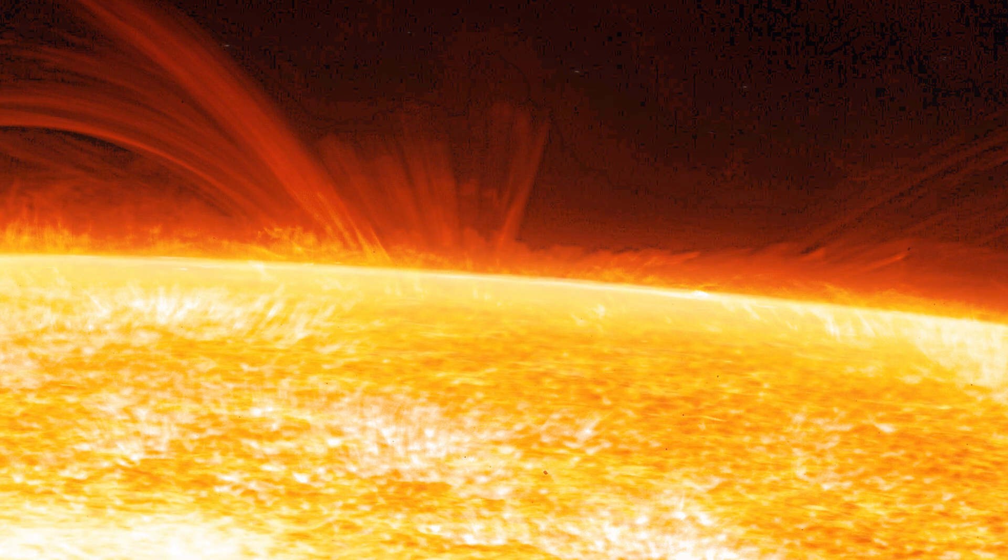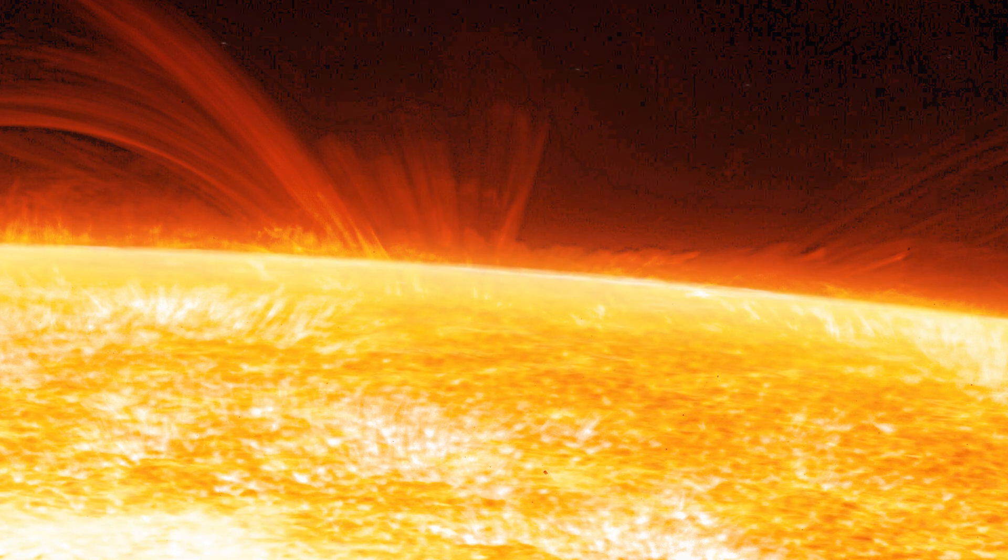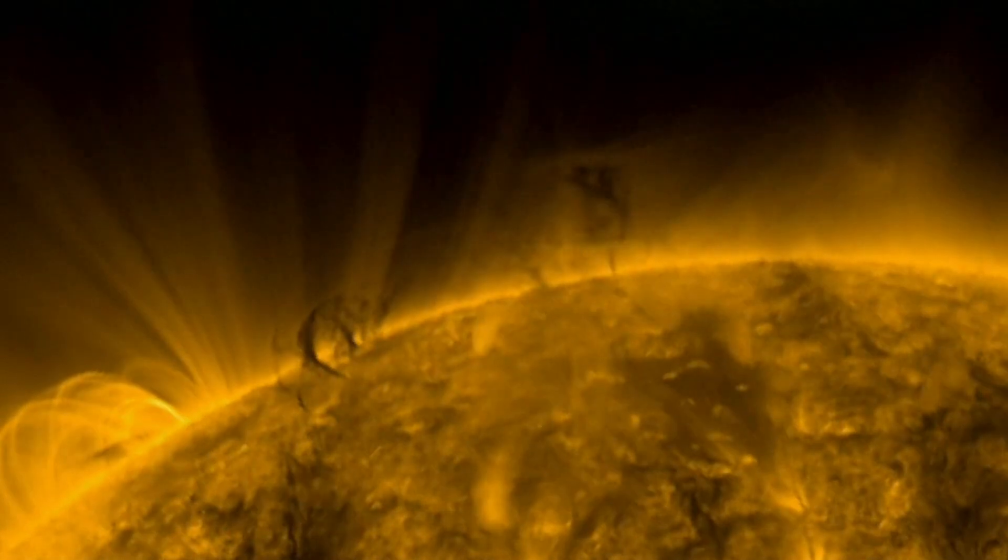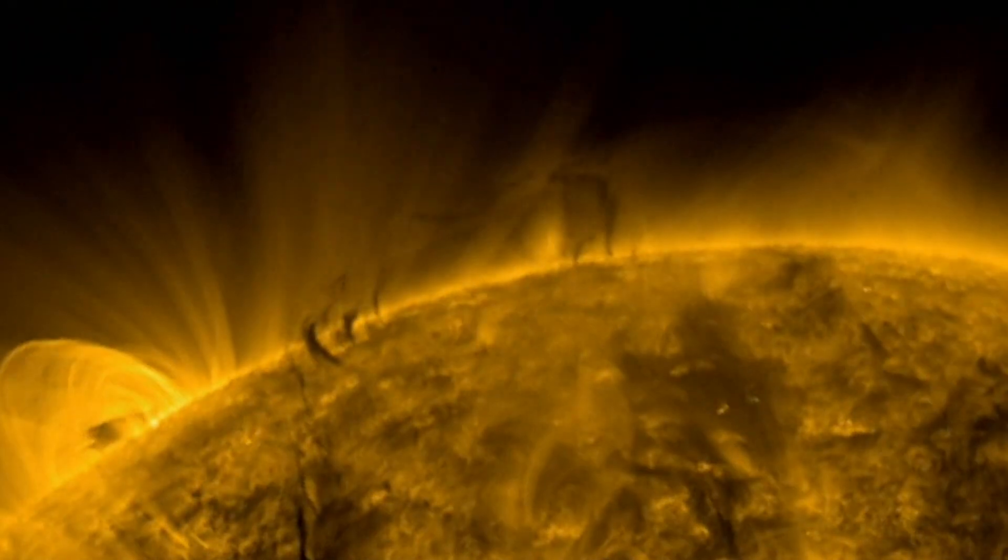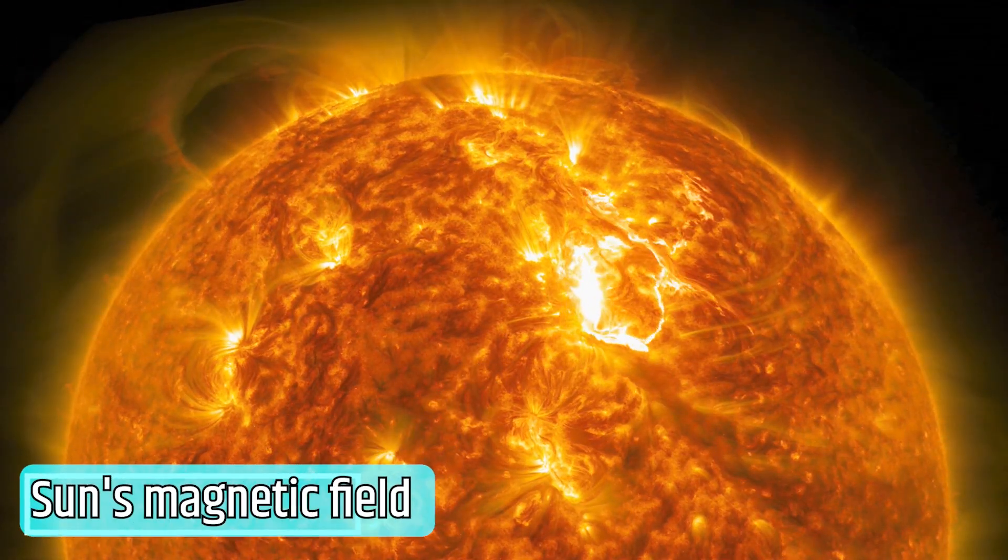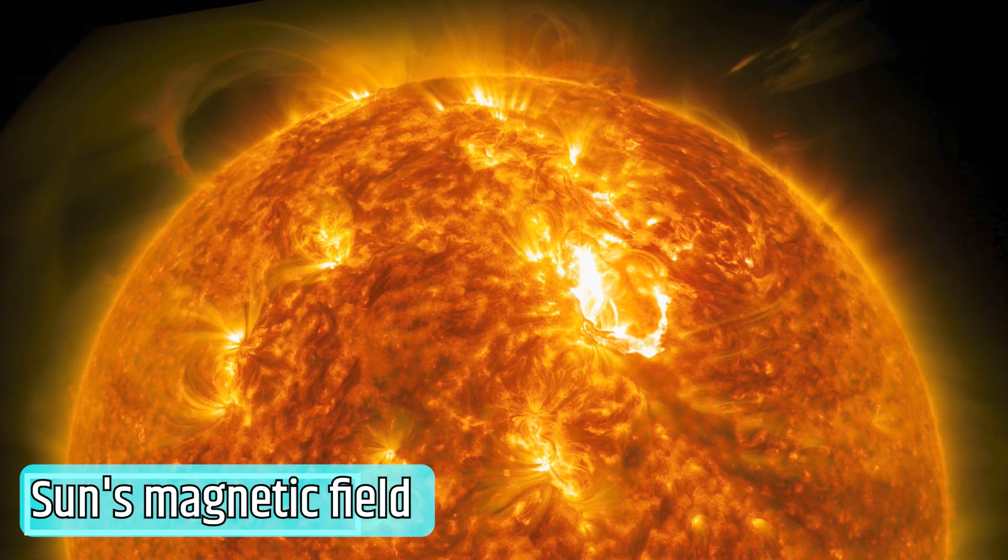Like the chromosphere, the temperature of the corona is extremely high, reaching up to about 2 million degrees Celsius. However, the mystery remains about why there is so much heat in this region. It is suggested that the sun's magnetic field plays a crucial role in this phenomenon.